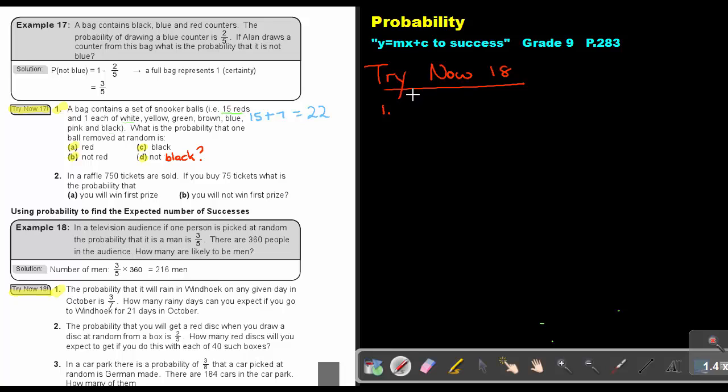So basically, we're just going to say we take that probability, 3 out of 7. We multiply it with the amount of days you spend, and it's 9. So therefore, 9 rainy days. You can expect 9 rainy days.